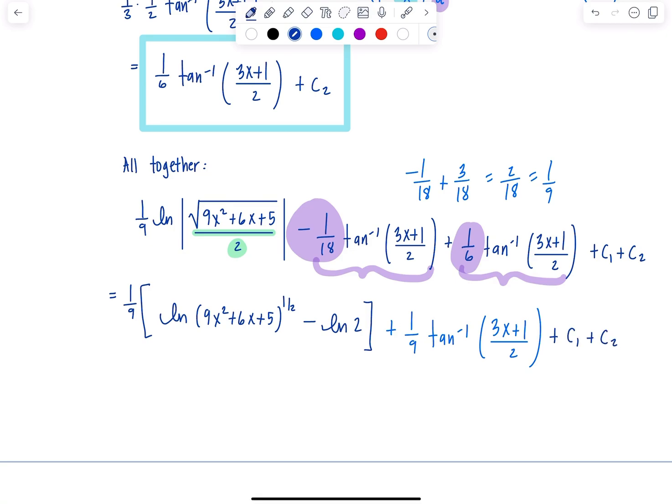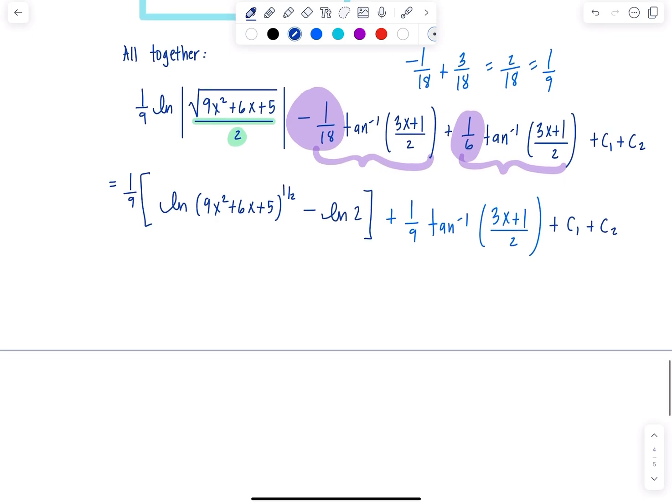We're not done cleaning up. I can move this 1 half exponent to the front, it's one of our log properties. I don't have to put absolute value around 9x squared plus 6x plus 5, because it can never be negative or 0. So I have 1 18th ln 9x squared plus 6x plus 5.